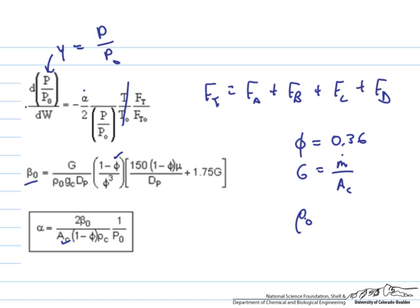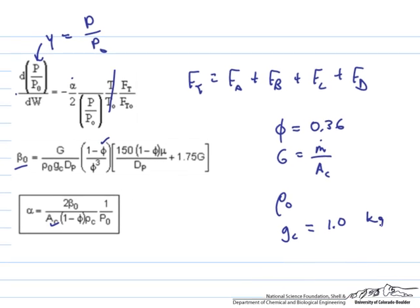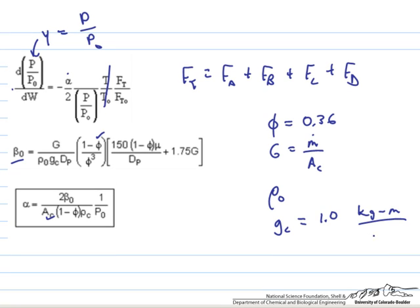We're going to need to know the density of the fluid at the inlet conditions. We'll need to know GC. We're going to work in SI units, and so that makes GC have a convenient value of 1 in the units of kilograms, meters per newton second squared. We'll need the particle diameter, and that's given in the problem statement as being 0.01 meters, so we have that number.